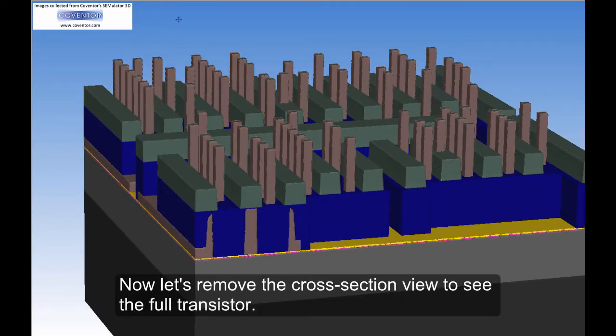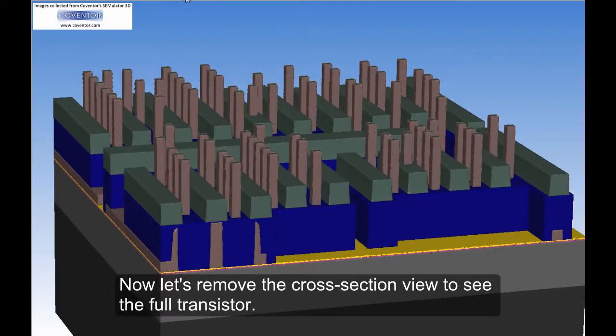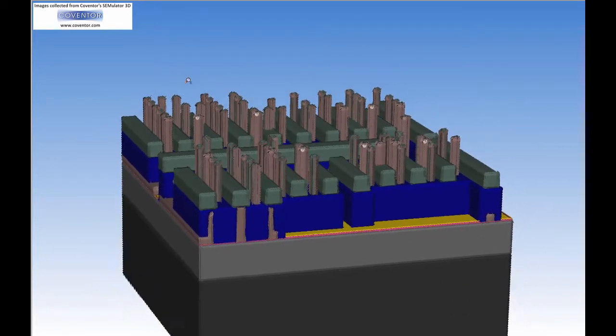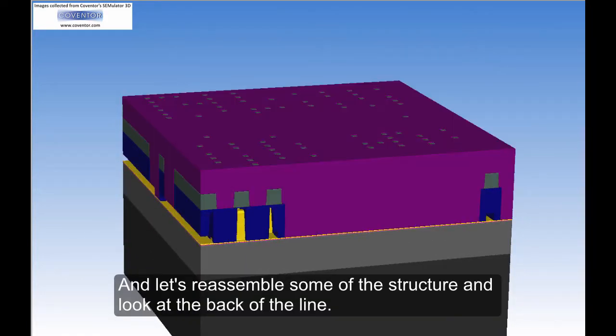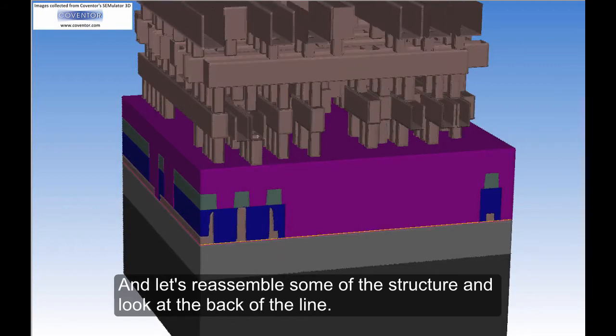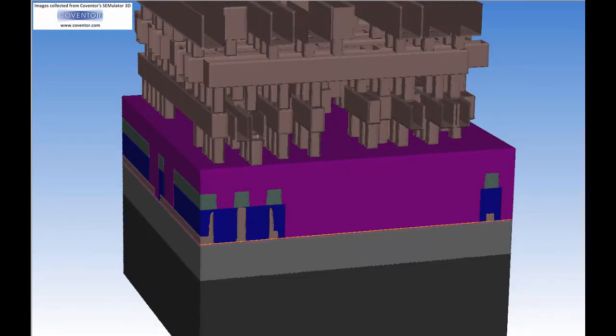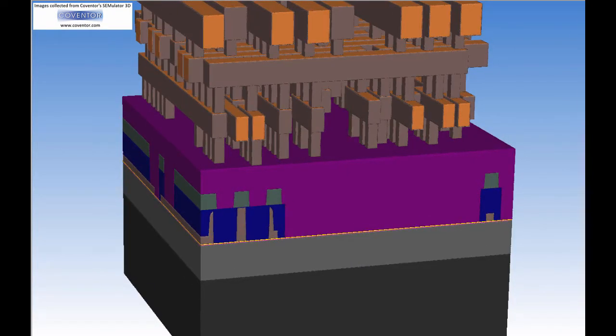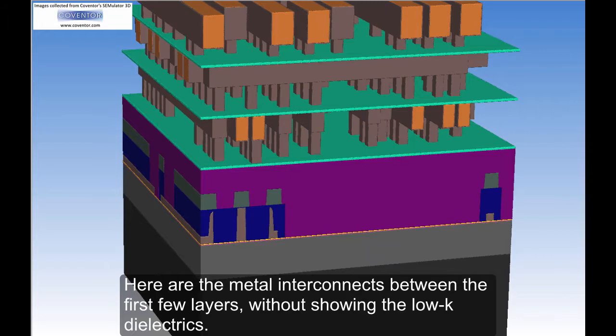Now let's remove the cross-section view to see the full transistor. And let's reassemble some of the structure and look at the back of the line. Here are the metal interconnects between the first few layers without showing the low-K dielectrics.